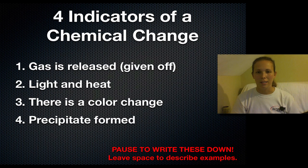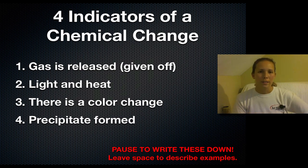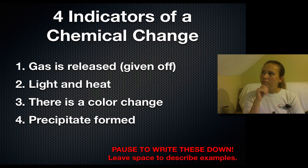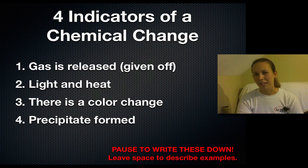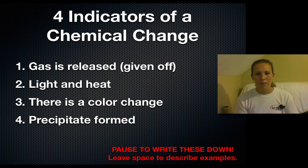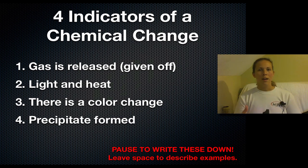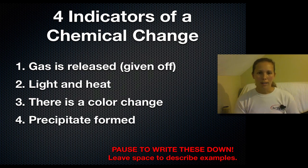Pause the video for a few minutes to write these down. There are four indicators of chemical change: gas being released or given off, light and heat, a color change, and a precipitate is formed. I'll give you guys a few examples — make sure you write down a little bit of description of each of these so you remember what each of these things looks like.